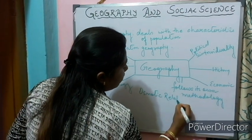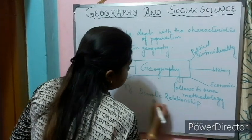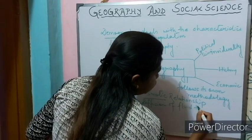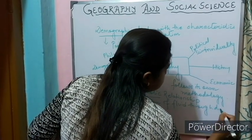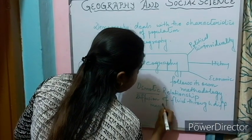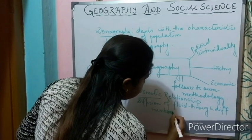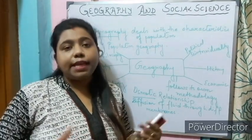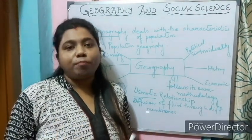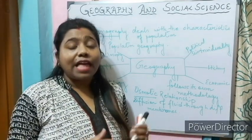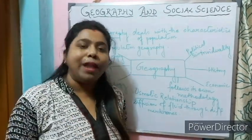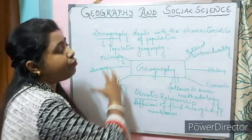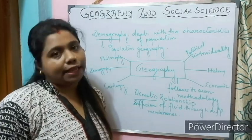Osmotic — you have learned it in science — means the diffusion of fluid through different membranes. For example, the cells in our body are separated through membranes but they have individual identity, and that does not obstruct the flow of blood. So to understand geography as a whole subject, we need to understand different disciplines of social science and natural science.